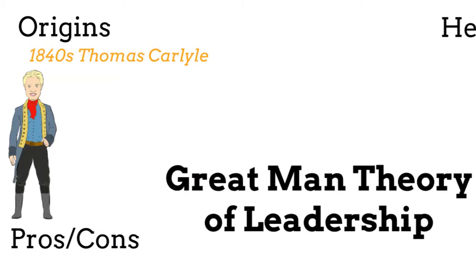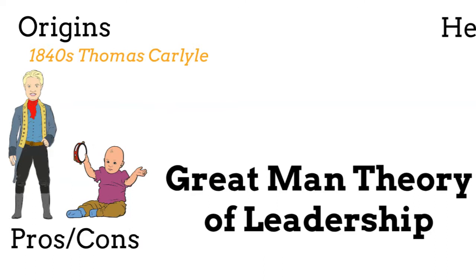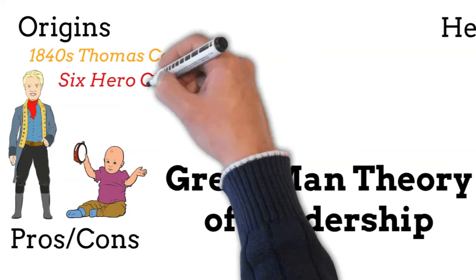Great Man Theory stipulates that some people are born as truly exceptional people bound to become leaders. They will use the world and its events to find a way of becoming great leaders through one of six hero classes: divinity, prophet, poet, priest, king, or man of letters.